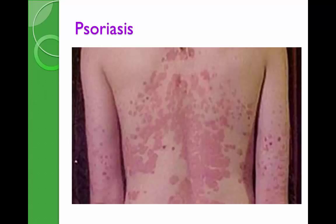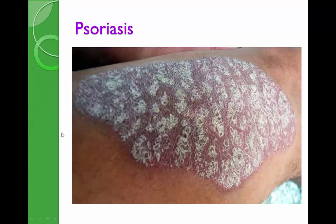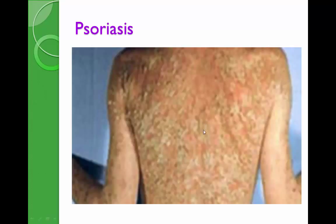Looking at psoriasis guttata, which is more generalized: there are many subtypes. Most commonly you see plaques with a silvery appearance on the scalp and extensor surfaces such as elbows and knees, but it can occur on the genitals, buttocks, nails, axilla, and umbilicus. The most common presentation is erythematous papules or plaques covered with thick silvery shiny scales.